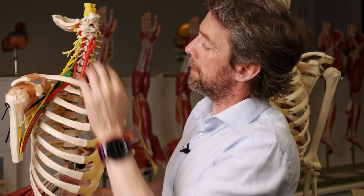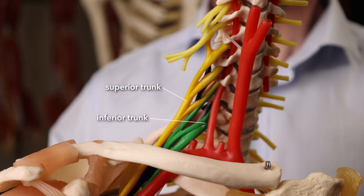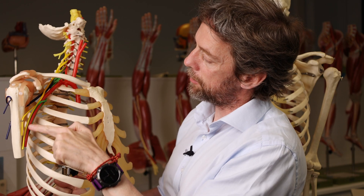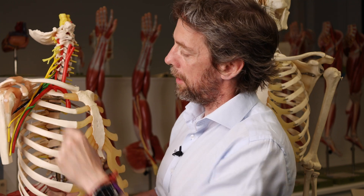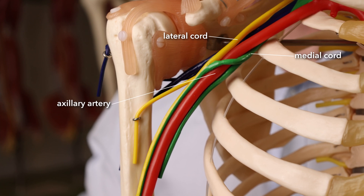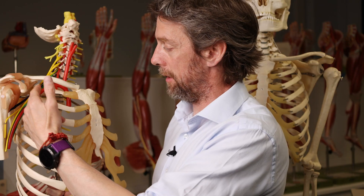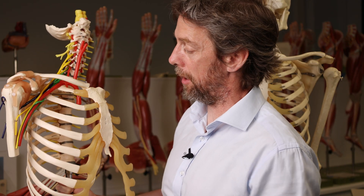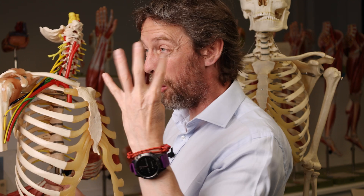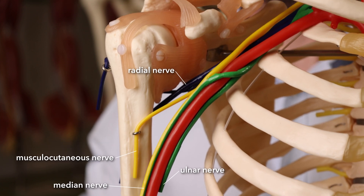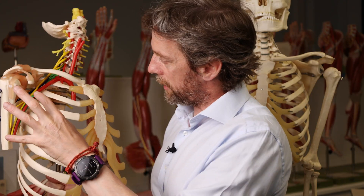So we see those roots coming together as trunks — an upper, middle and lower trunk. Then after the trunks, we see divisions where there's some more crossing over. This artery here is becoming the axillary artery, and the brachial plexus is wrapped around the axillary artery. These cords get named relative to their position around the axillary artery. And then from there we see the nerves of the upper limb — the four major nerves are musculocutaneous, radial, median, and ulnar nerves.